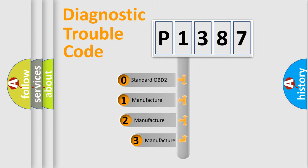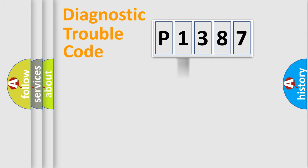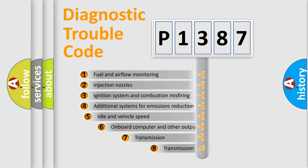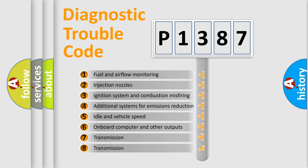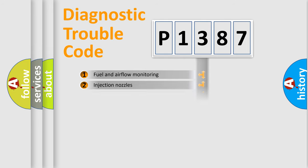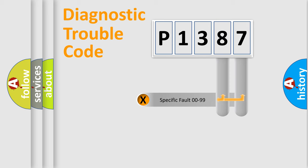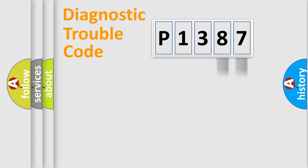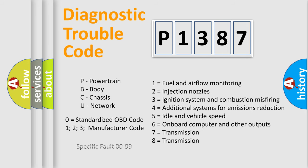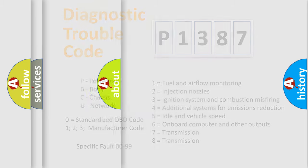If the second character is expressed as zero, it is a standardized error. In the case of numbers 1, 2, or 3, it is a more specific expression of a car-specific error. The third character specifies a subset of errors. This division is valid only for the standardized DTC code, where only the last two characters define the specific fault of the group. Such a division is valid only if the second character code is expressed by the number zero.